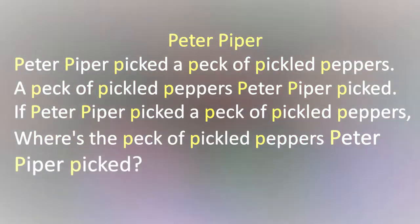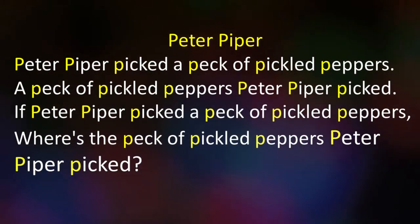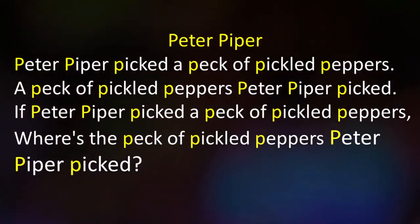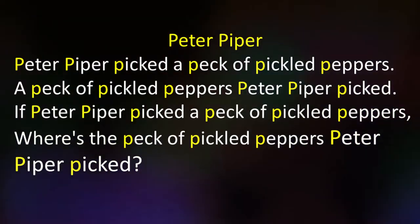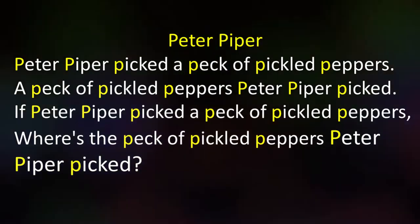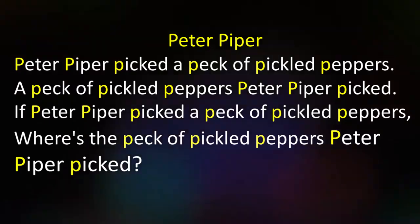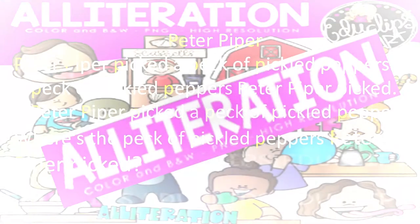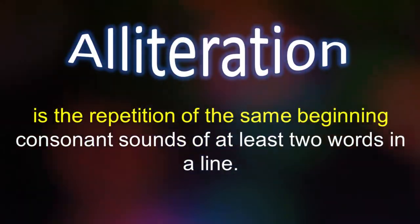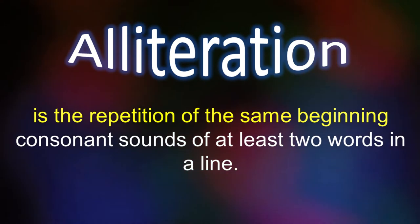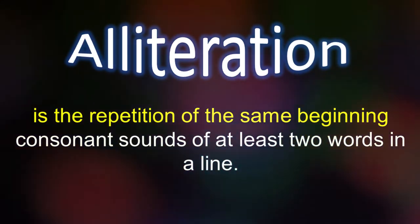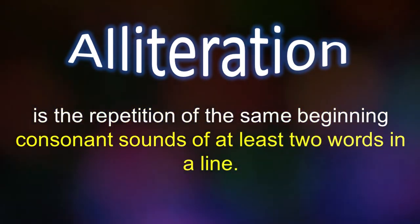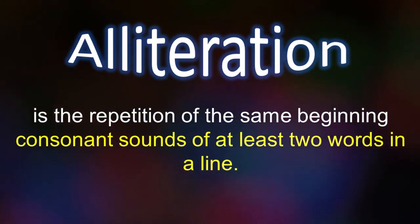Did you hear the rhythmical effect? What common sound did you hear in all the lines? Yes, the initial sound of the consonant P. The sound device used in that tongue twister is called alliteration. Alliteration is the repetition of the same beginning consonant sounds of at least two words in a line.